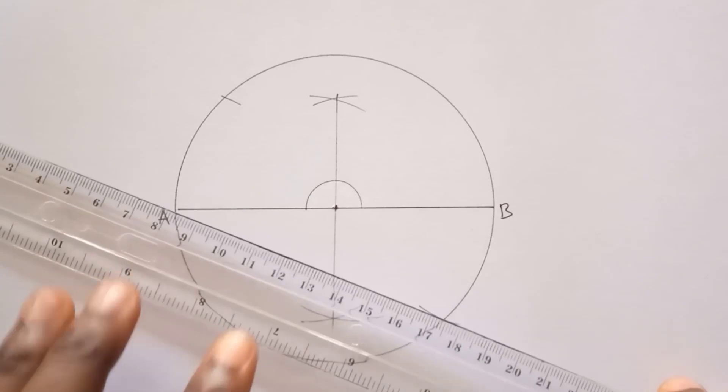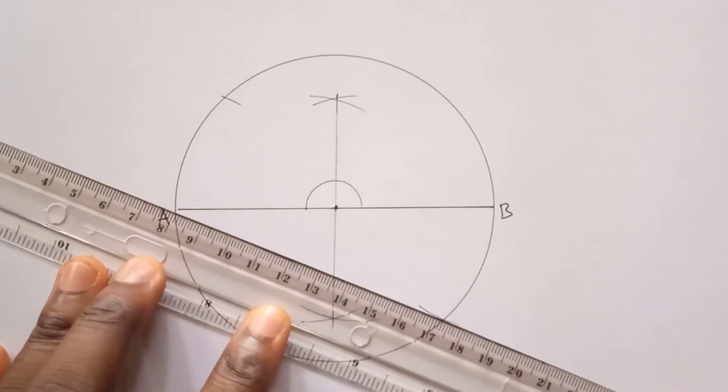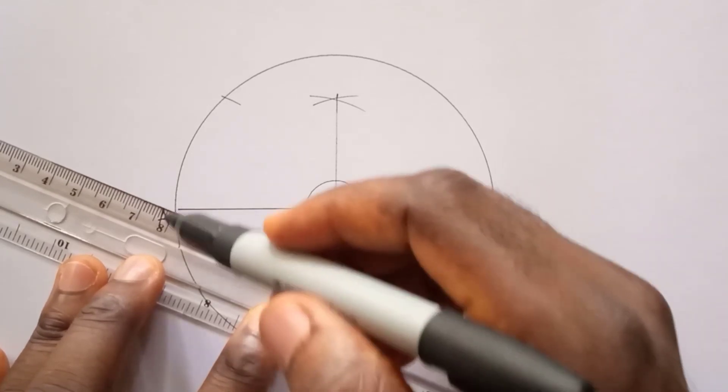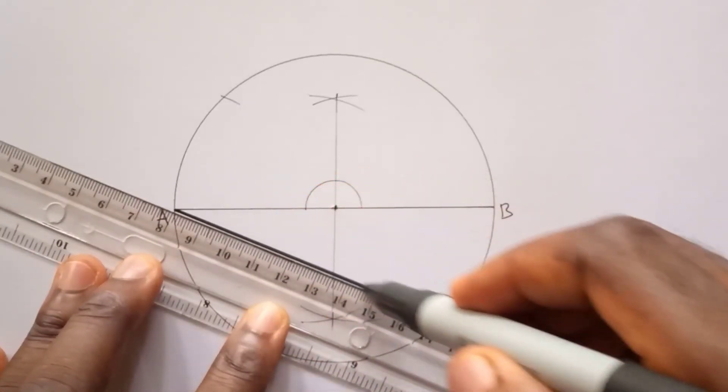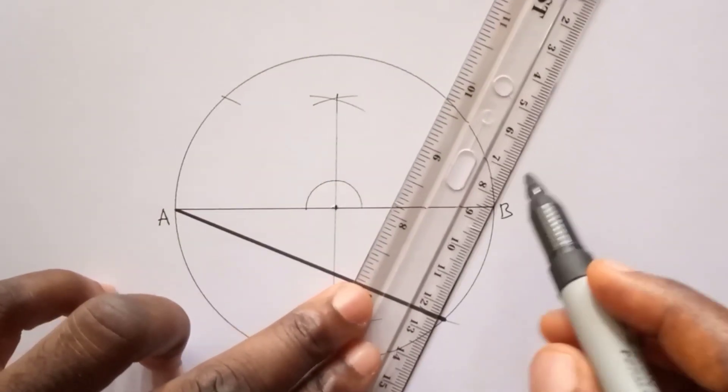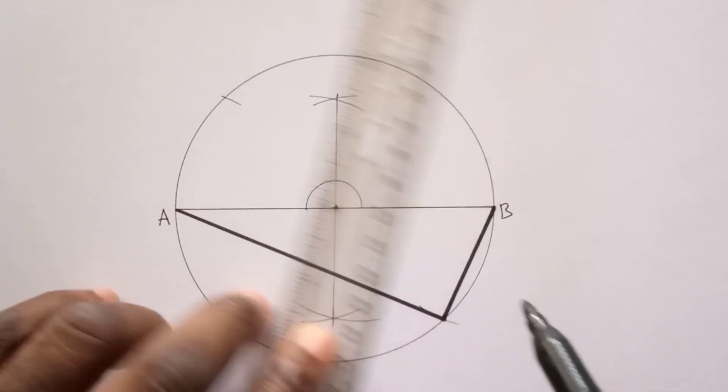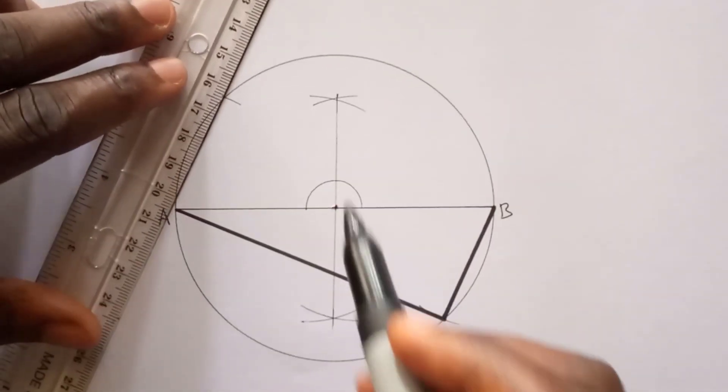With your meter rule, you will join these points to A, this point to B, this point to C.